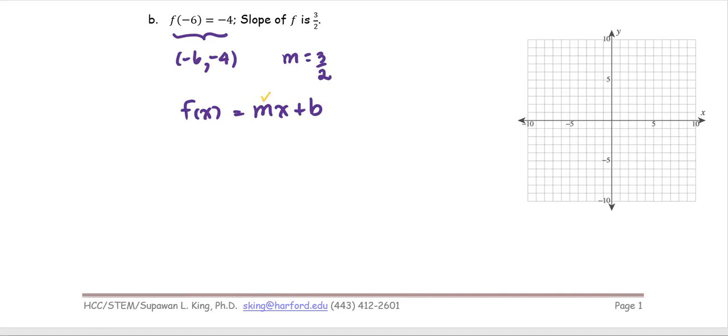We got the m from provided information, but we don't know the b value yet. We are going to use the ordered pair that we obtain from f(-6) = -4, as x = -6 and y = -4. We place it in the function form and then solve for b. So -4 = (3/2)(-6) + b.